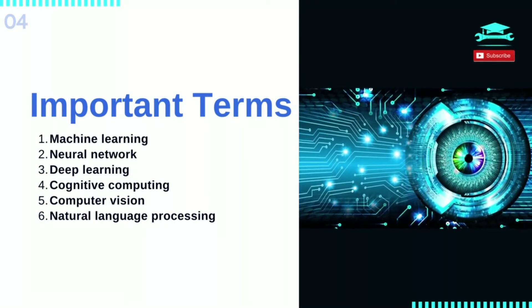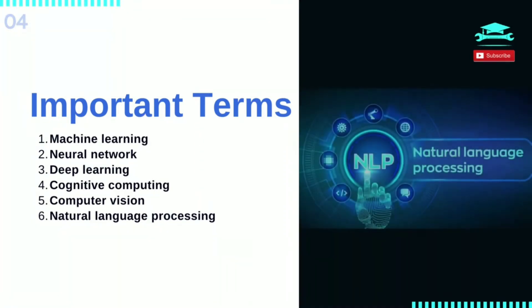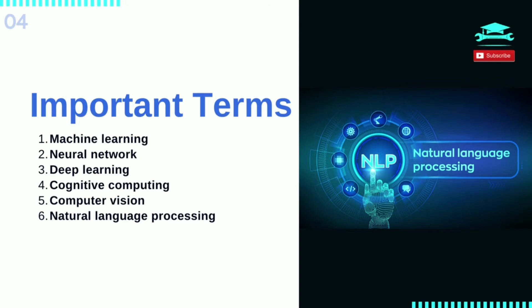Computer Vision relies on pattern recognition and deep learning to recognize what's in a picture or video. When machines can process, analyze, and understand images, they can capture images or videos in real time and interpret their surroundings. Natural Language Processing, or NLP, is the ability of computers to analyze, understand, and generate human language, including speech. The next stage of NLP is natural language interaction, which allows humans to communicate with computers using normal everyday language to perform tasks.